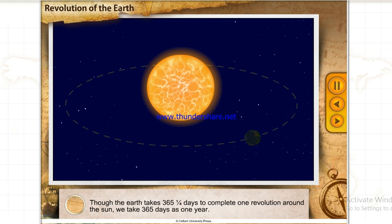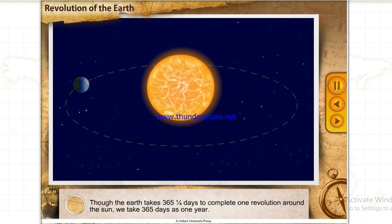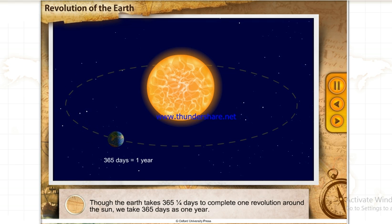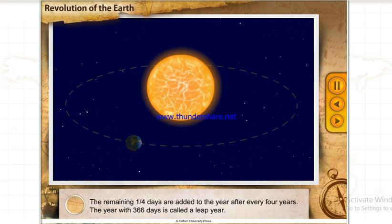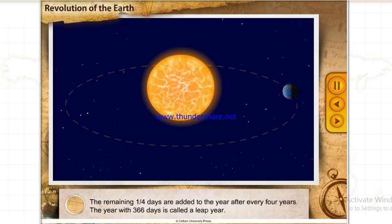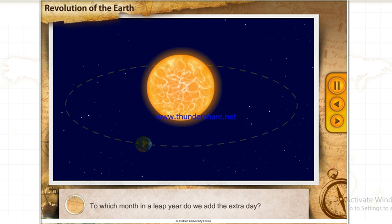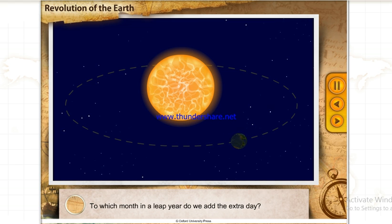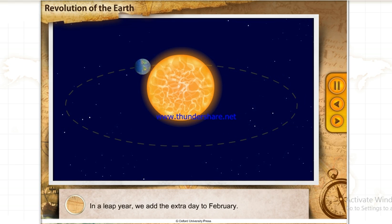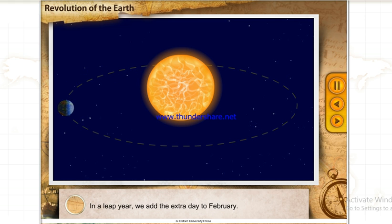Though the Earth takes 365 and one-fourth days to complete one revolution around the Sun, we take 365 days as one year. The remaining one-fourth days are added to the year after every four years. The year with 366 days is called a leap year. To which month in a leap year do we add the extra day? In a leap year, we add the extra day to February.